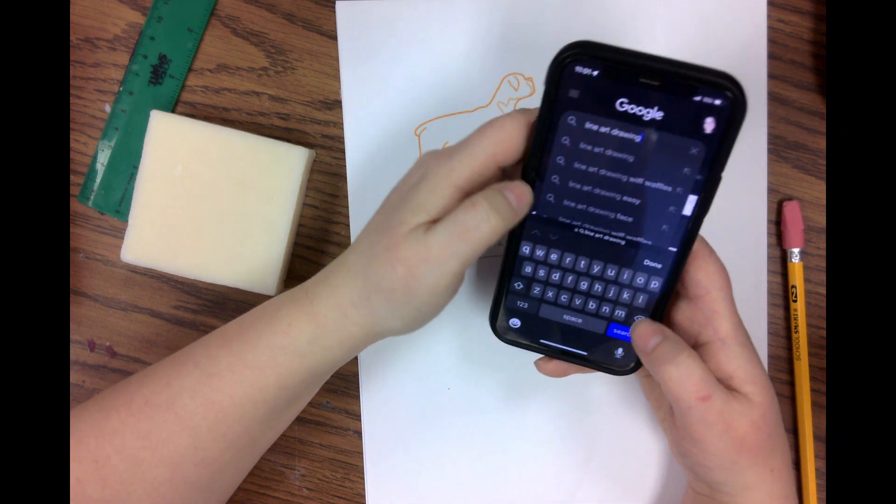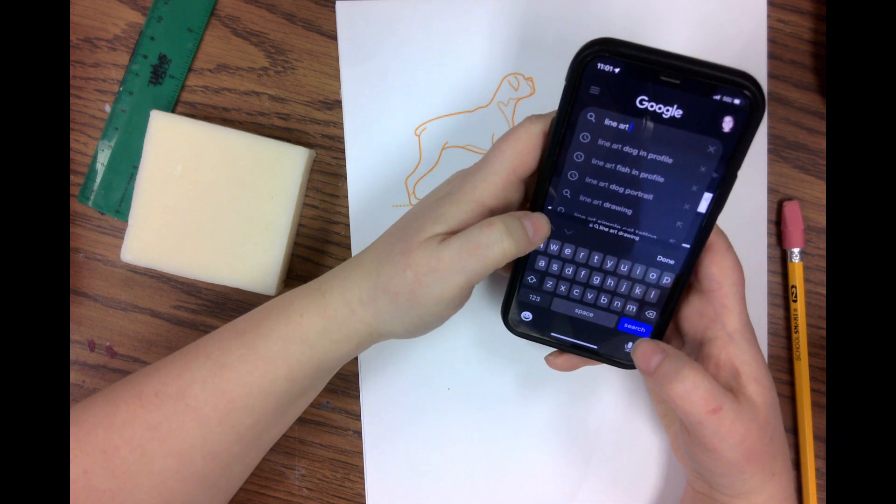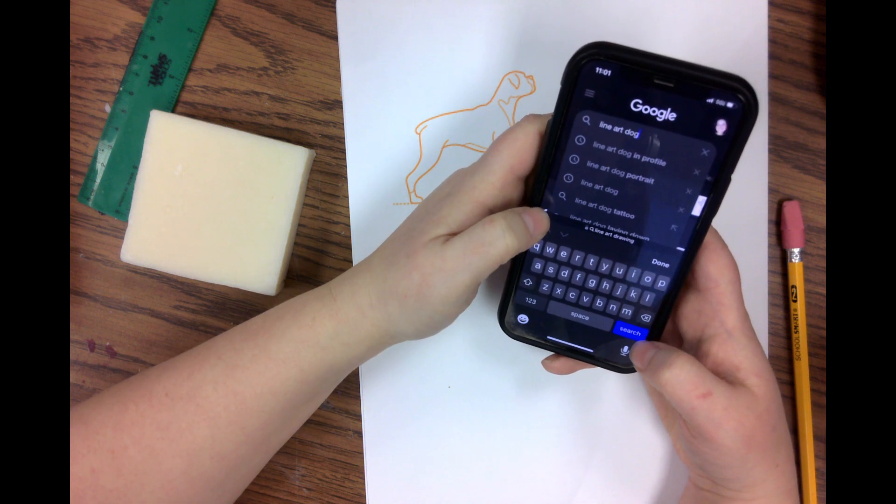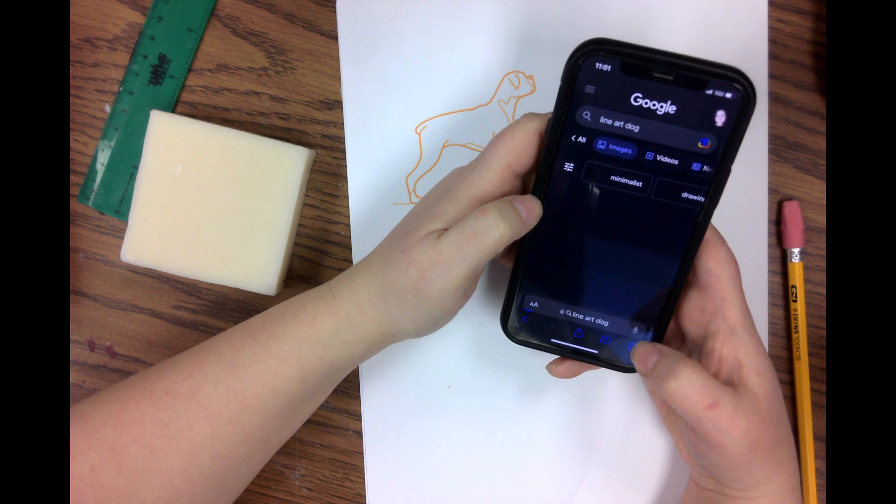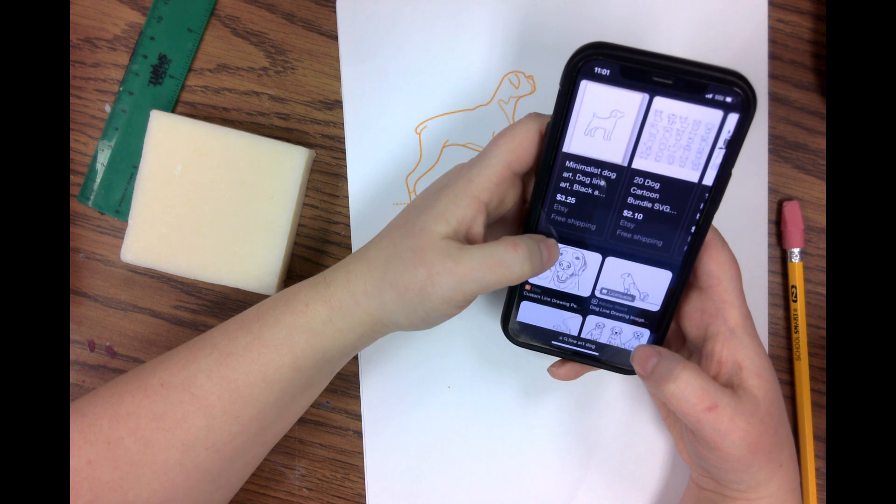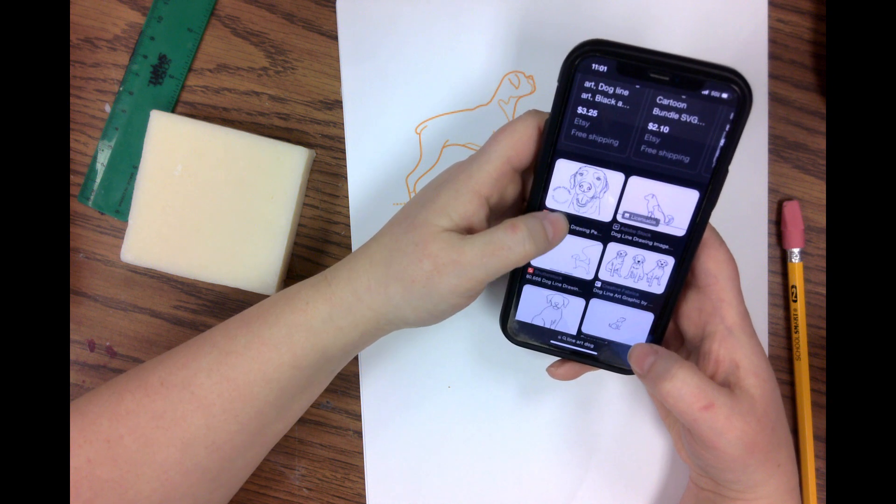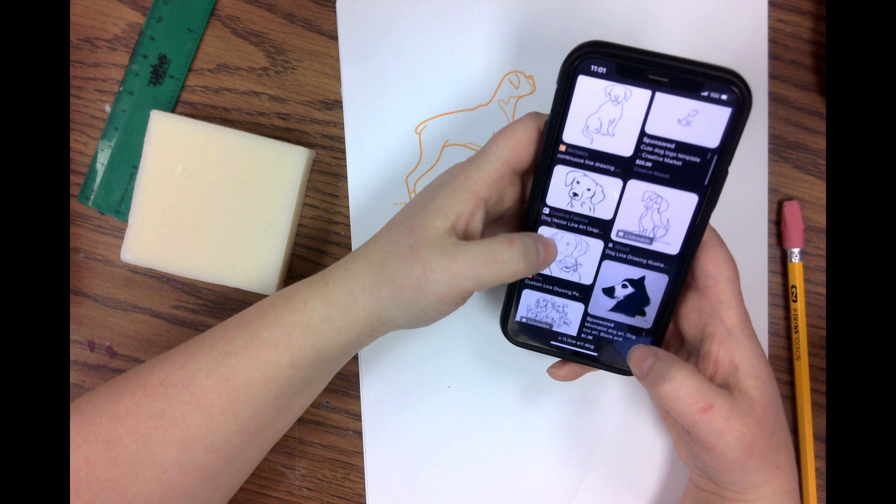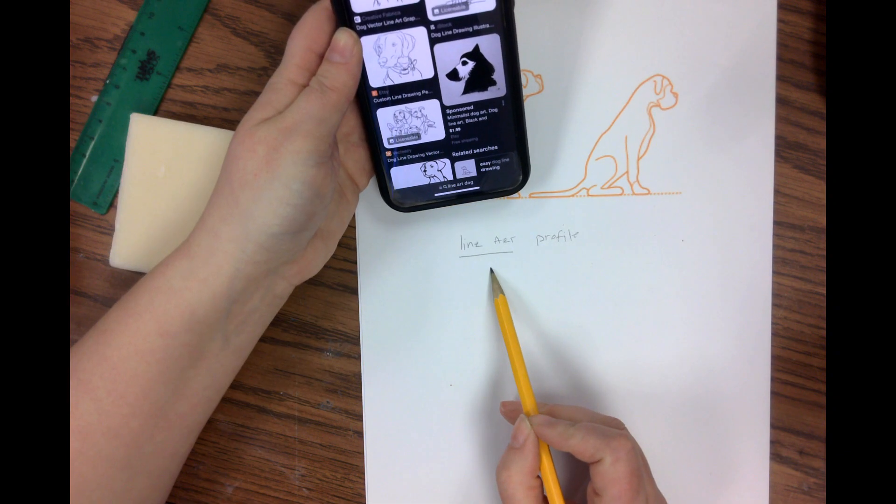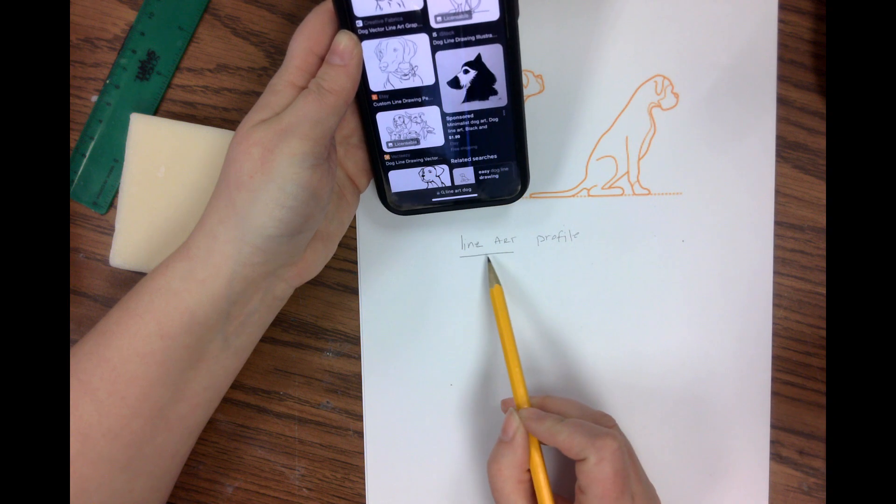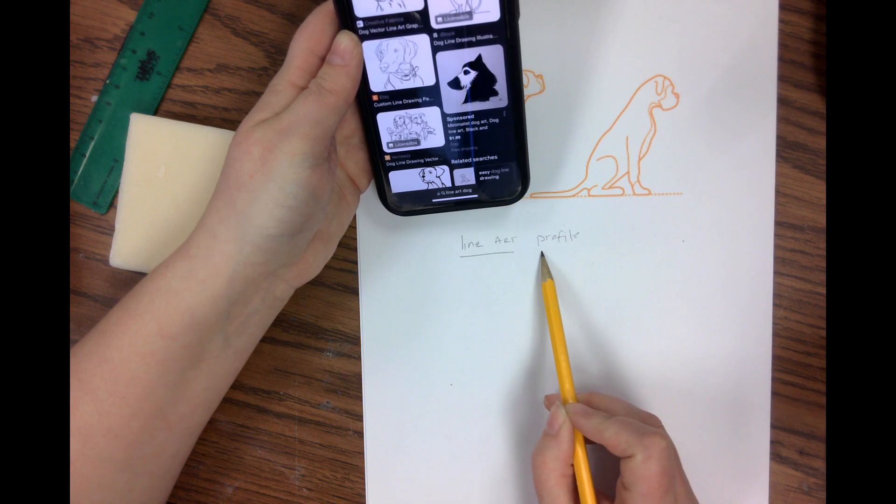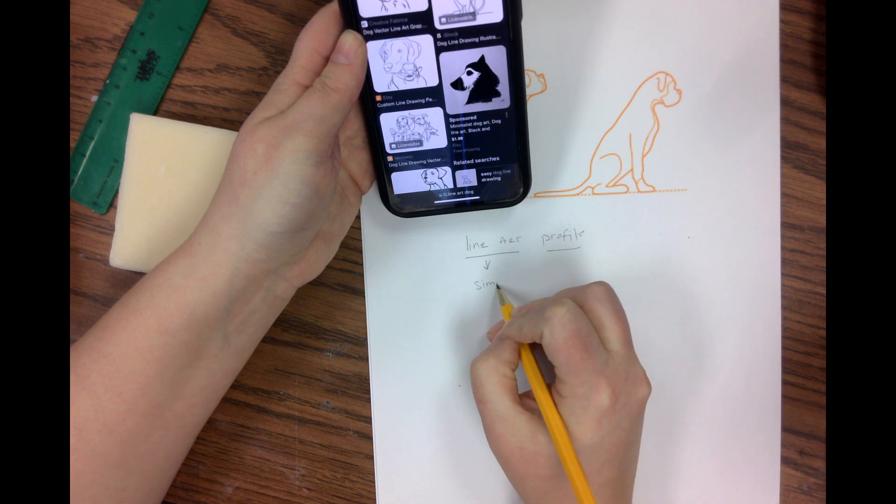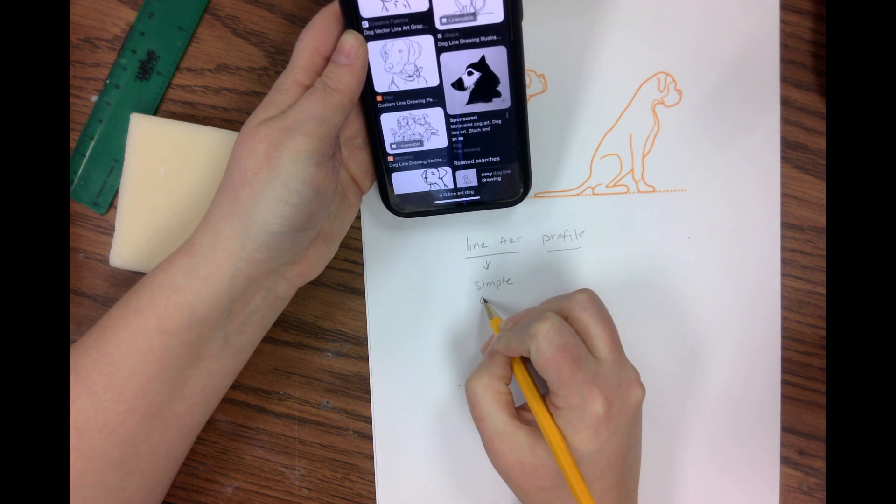If I say dog, for example, then it's going to give me all these coloring pages that are simplified drawings. So using line art and profile is super important. Now let's talk about profile. So line art is a simple drawing, okay?